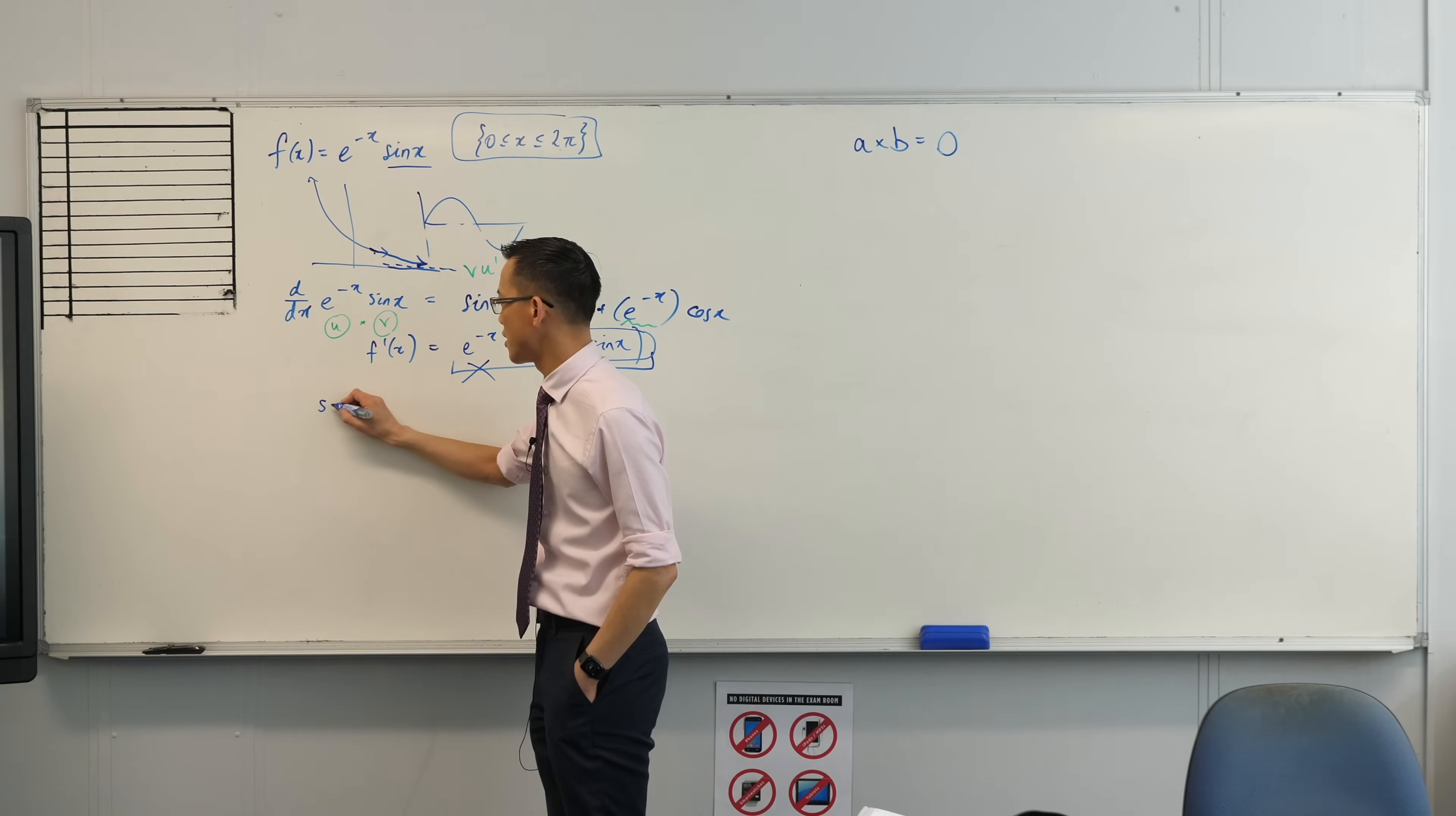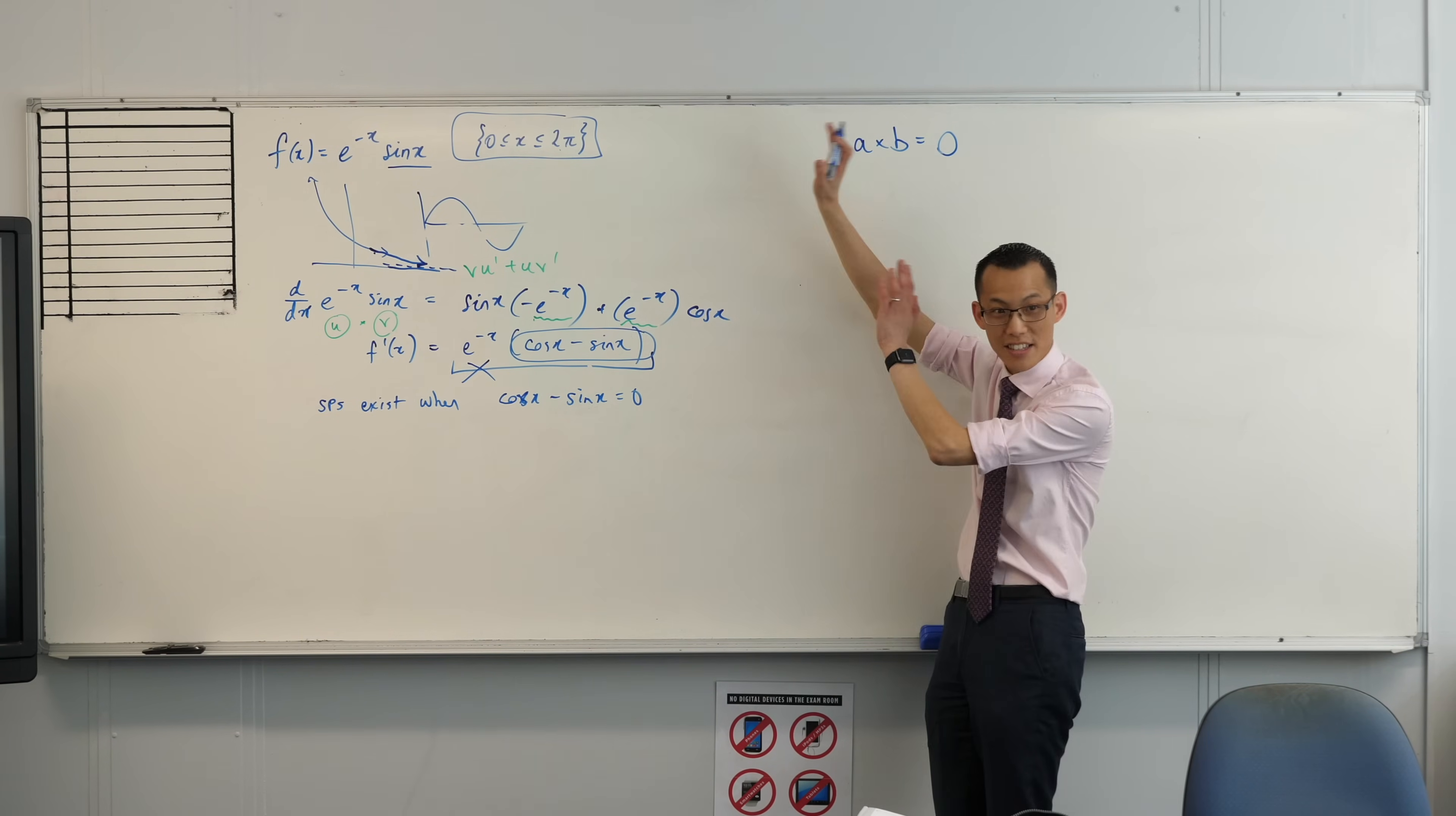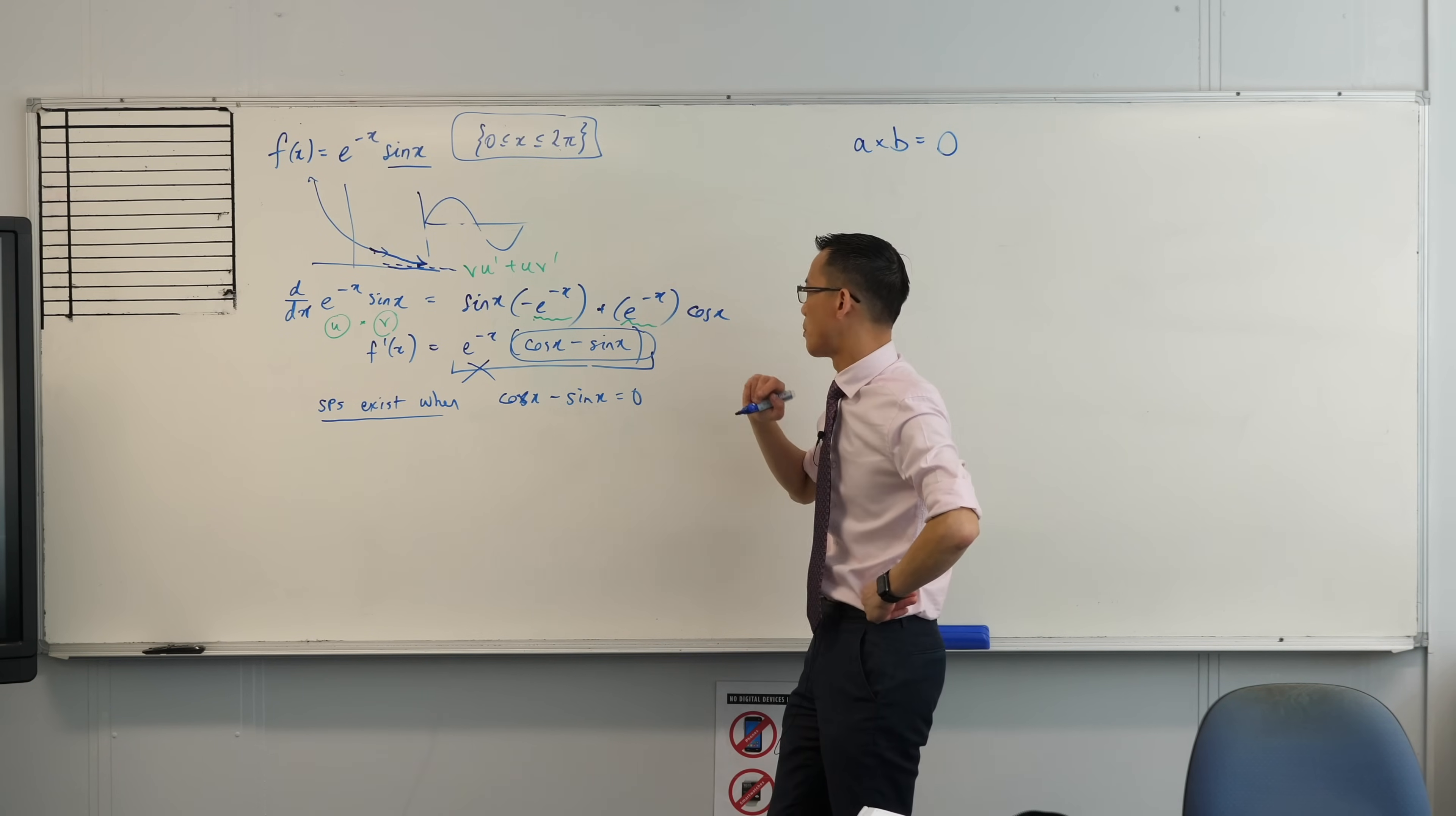I'll say stationary points exist when this part here, cos x minus sine x equals zero. There's a lot of notation and symbols, but it's actually really important to use verbal communication where necessary. Where am I going to solve this? I'm looking between naught and two pi.